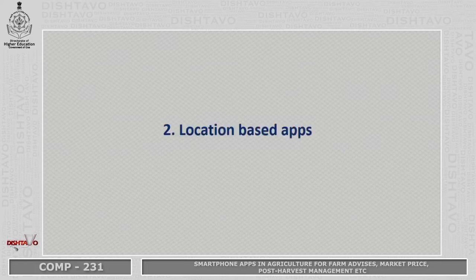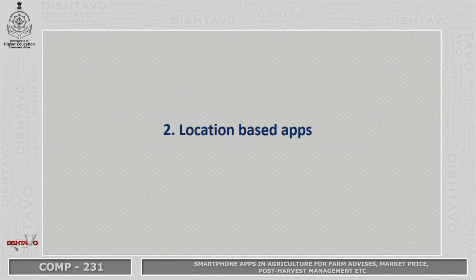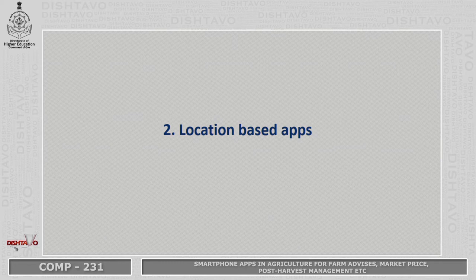The next one is location-based apps. Right now, adverse climatic conditions are affecting the agricultural world vastly and devastatingly. Location-based apps are helpful to identify weather forecasts and probable disease and pest attacks in future. These location-based apps are much more helpful to the farming community by helping them understand the future outlook for a particular crop — through weather forecasting, disease or pest attack outbreaks — so that certain management can be done by the farming community well in advance.